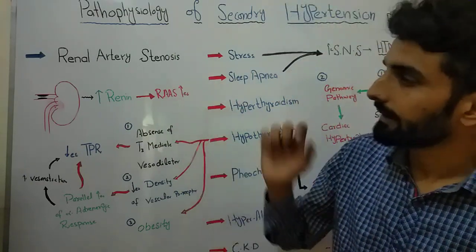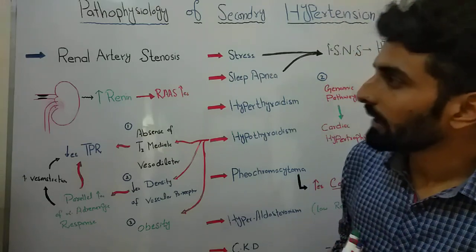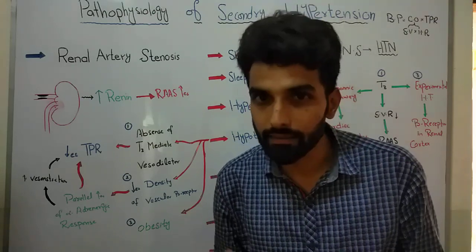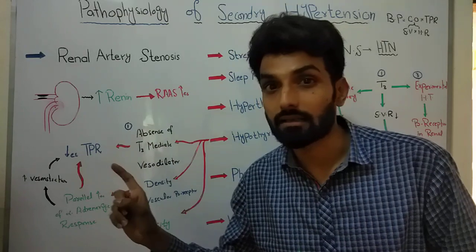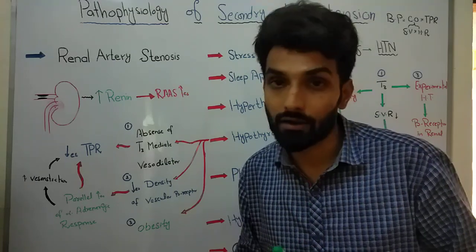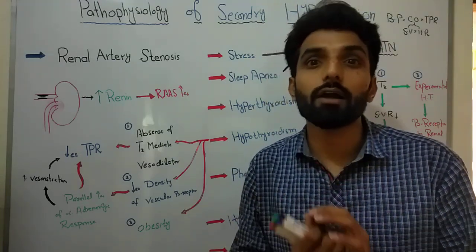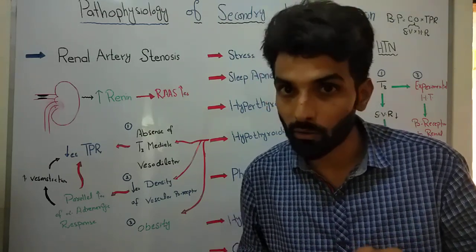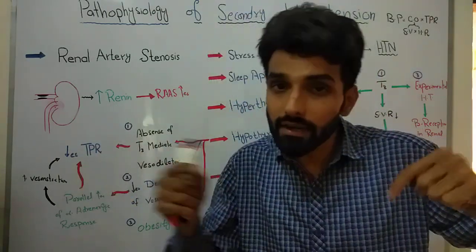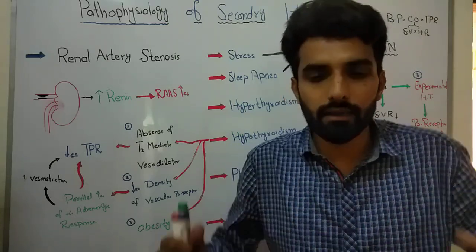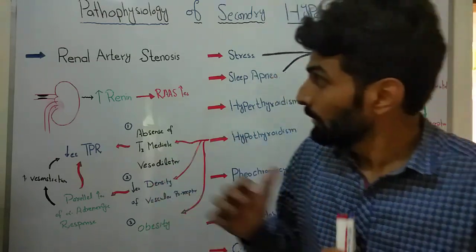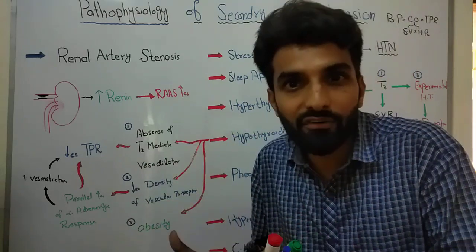If the renal artery gets stenosed — gets narrow — what will happen? The blood supply toward the kidney will decrease. Inside the kidney there is a nephron, and in the nephron there are afferent arterioles and efferent arterioles, and on the efferent arterioles there are juxtaglomerular cells. Those cells are responsible for secretion of renin, and they will secrete renin in response to low blood volume.